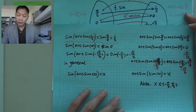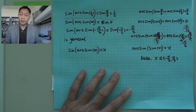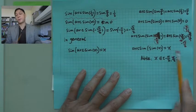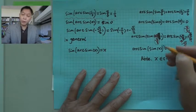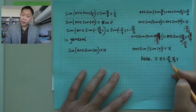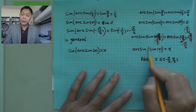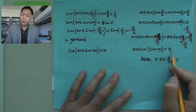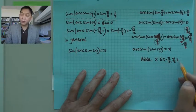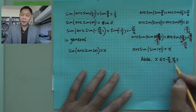In general, arc sine(sine(x)) = x. Remember, we restricted x to the interval from -π/2 to π/2. So arc sine(sine(x)) = x, where this x must be in the interval [-π/2, π/2], including the boundary points.